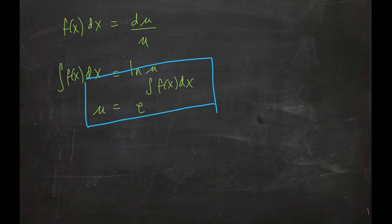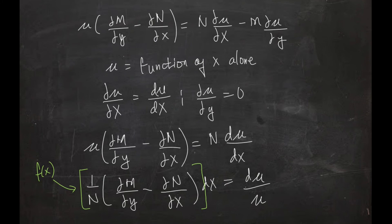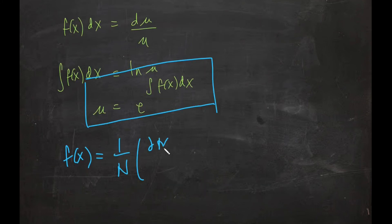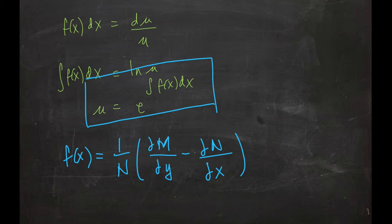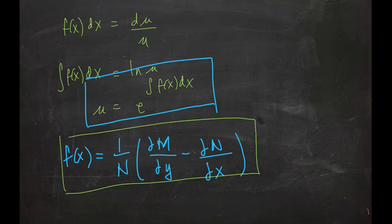We have to remember that f(x) here is equal to 1 over N times the quantity (partial derivative of M with respect to y minus partial derivative of N with respect to x). So remember that method.